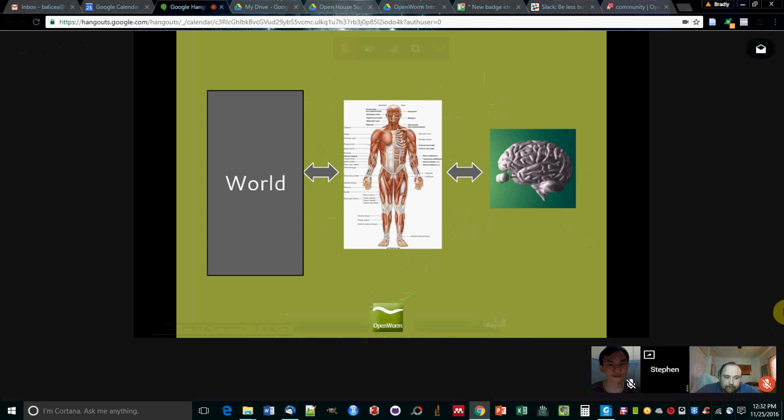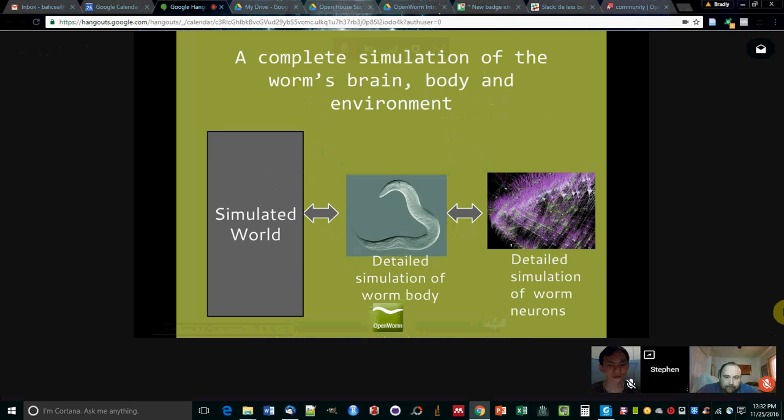And so this is what it would look like if we were trying to simulate a human. But of course the project's called OpenWorm. That's because what we realized at the beginning of the project is that if we wanted to make a goal that was as ambitious as this, we should start with the best known organism in biology that exists. And that turns out to be a worm.